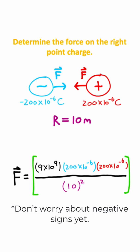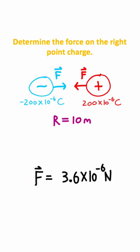Now all you need to do is evaluate this. Your force is 3.6 times 10 to the negative 6 Newtons. But remember, we're focusing on the right point charge, and that point charge is traveling to the left. So we need to make this value negative. So negative 3.6 times 10 to the negative 6 Newtons is the answer to this problem.